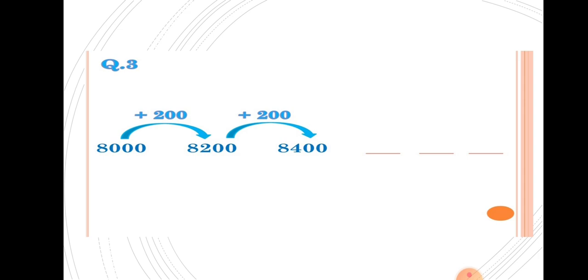Next example: 8000, 8200, 8400. From 8000 to 8200, increased by 200. From 8200 to 8400, increased by 200. So students, we have to add 200 to get the next number.